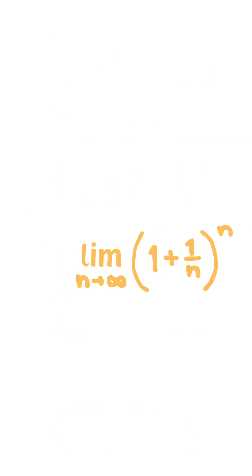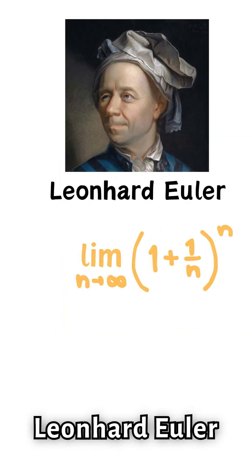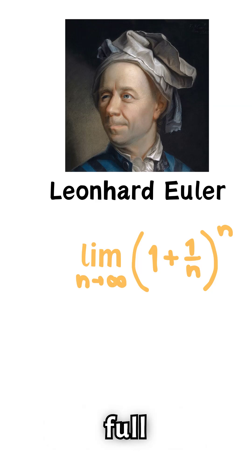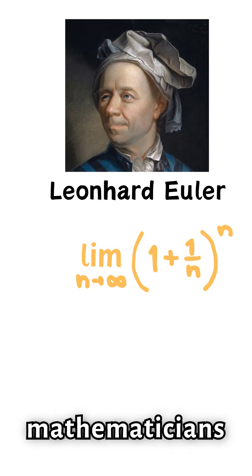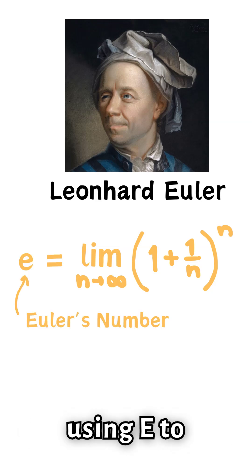Jacob Bernoulli discovered this limit. But it was Leonhard Euler in the 18th century who unlocked its full potential, showing just how fundamental this number is to math. That's why mathematicians honor Euler by using e to represent this limit.